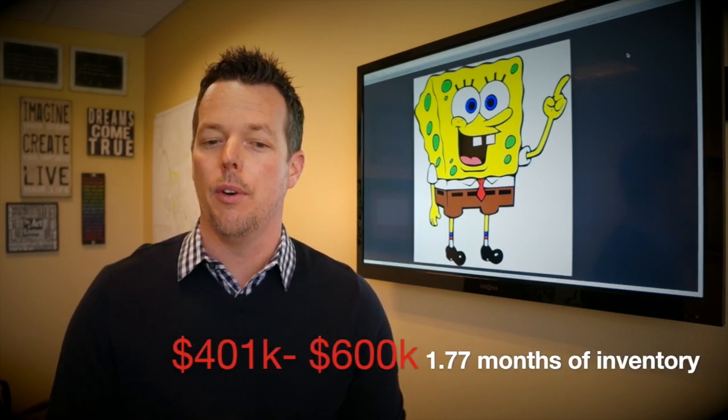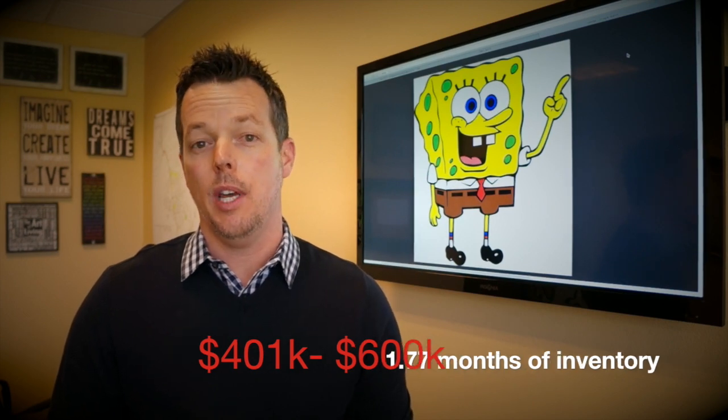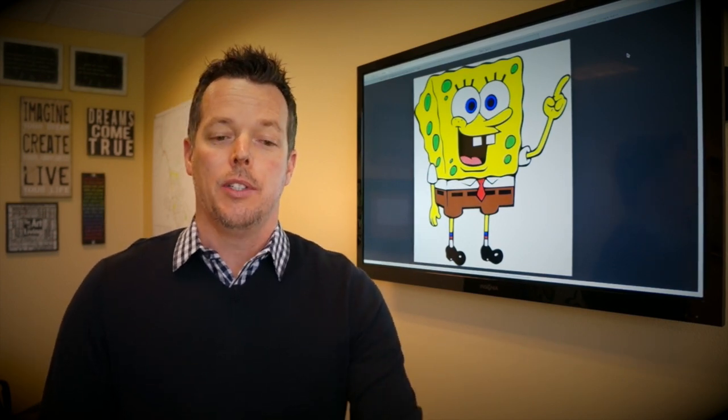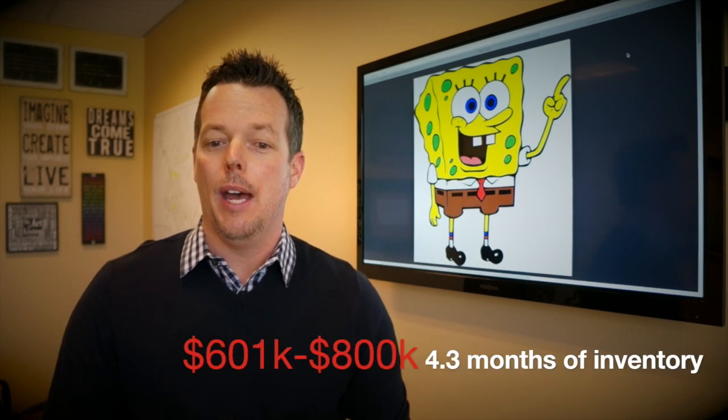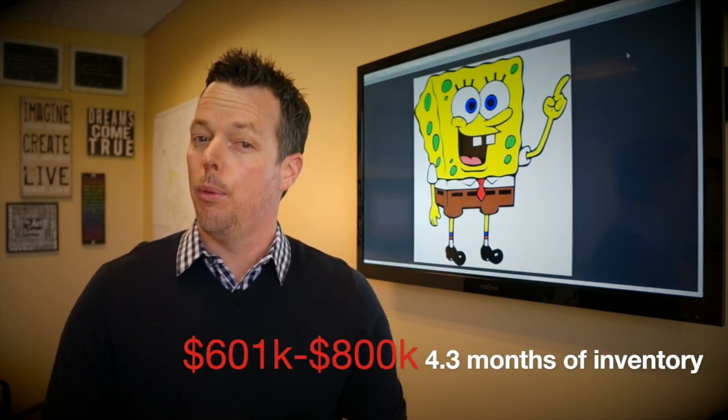$401,000 to $600,000, we've got a 1.7 month supply, starting to grow. $601,000 to $800,000, we've got a 4.3 month supply. That's definitely a little more balanced.